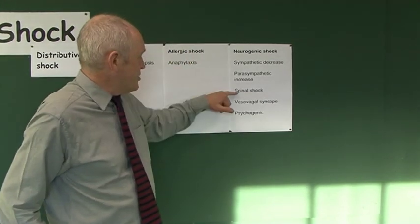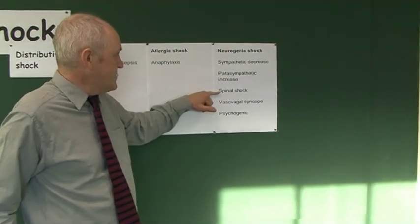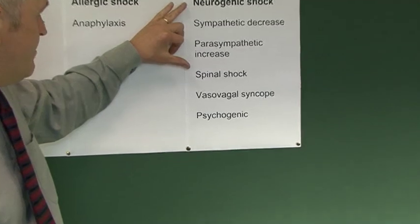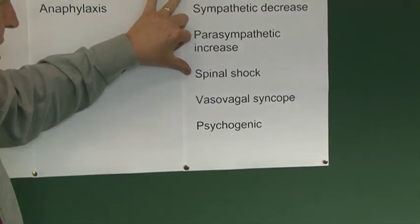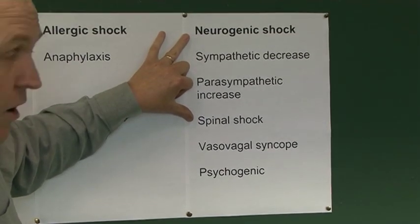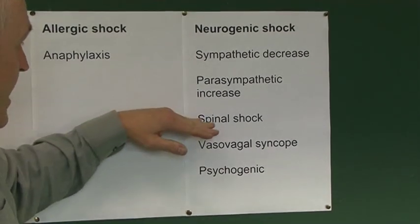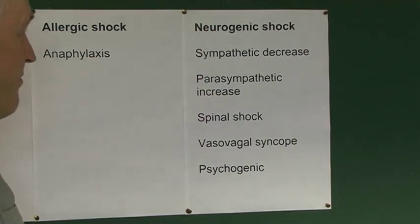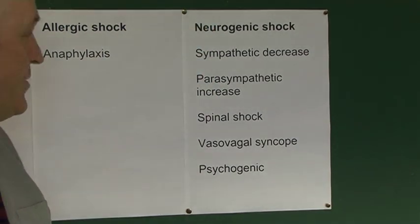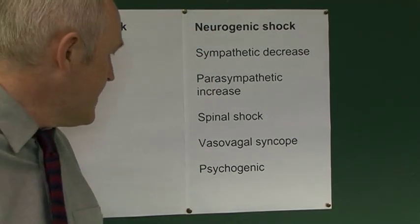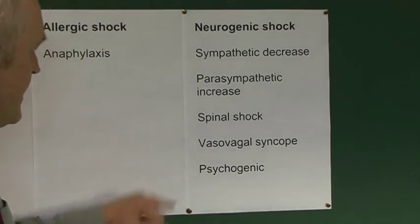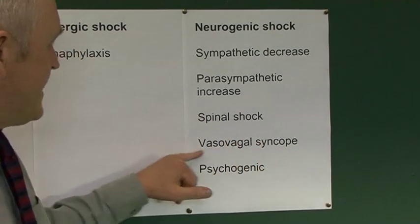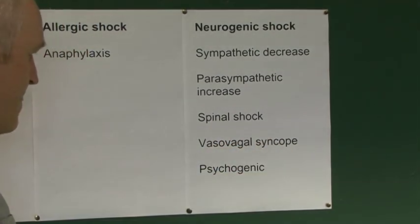People sometimes use the terms neurogenic and spinal shock interchangeably — that's wrong. Spinal shock is a subdivision of neurogenic shock. Another cause is vaso-vagal syncope — fainting. Syncope means fainting. This involves vasodilation and increased vagal activity; the vagus nerve is the 10th cranial nerve and is parasympathetic.